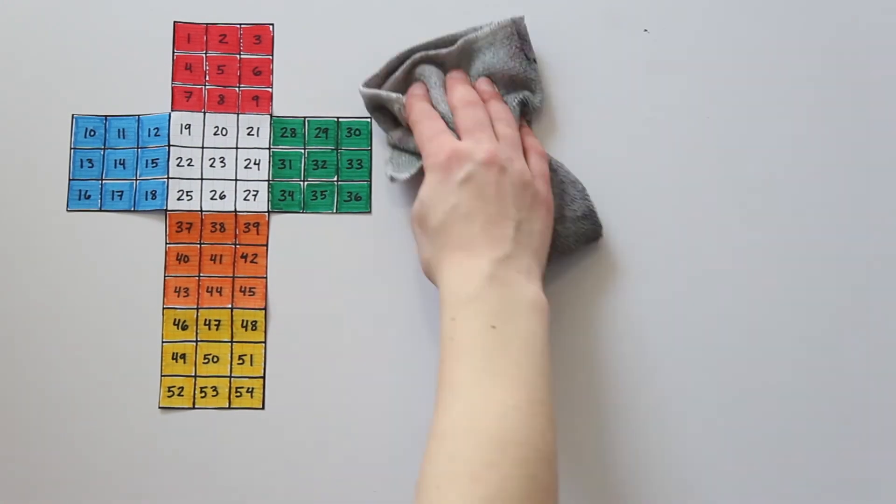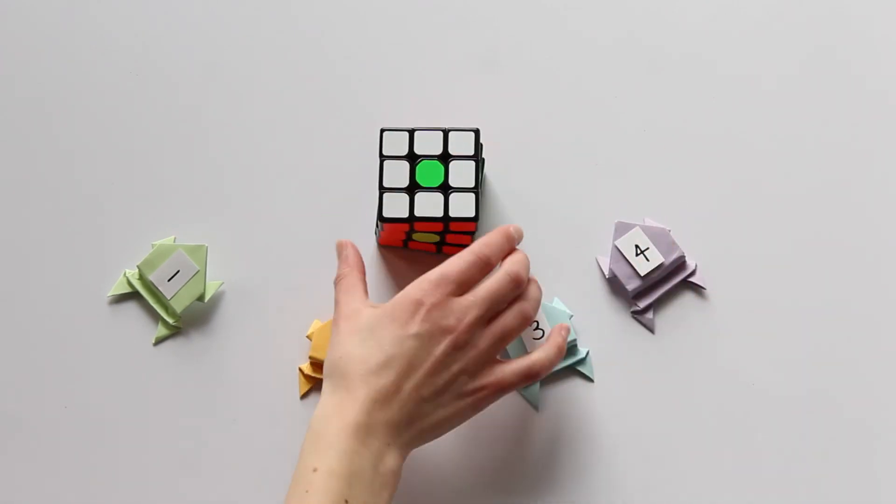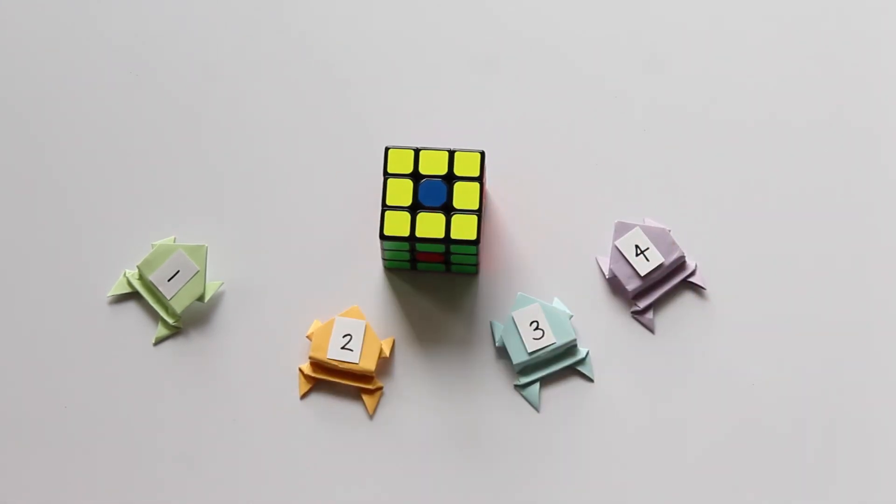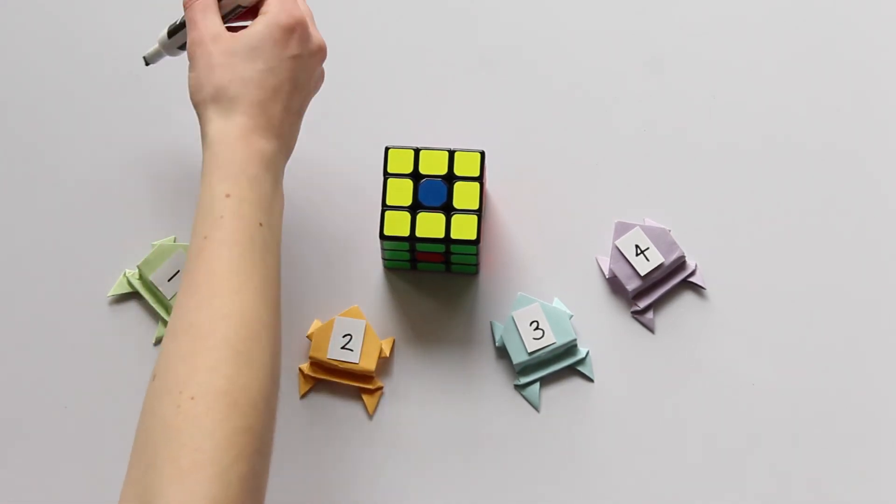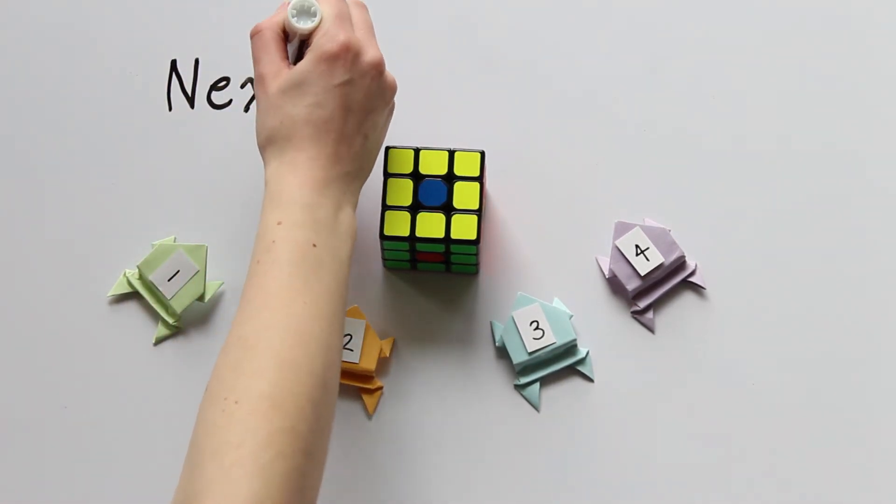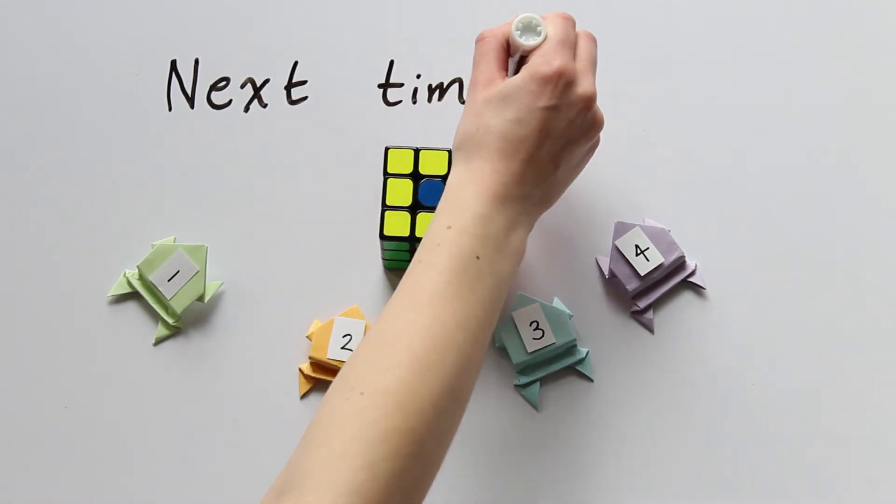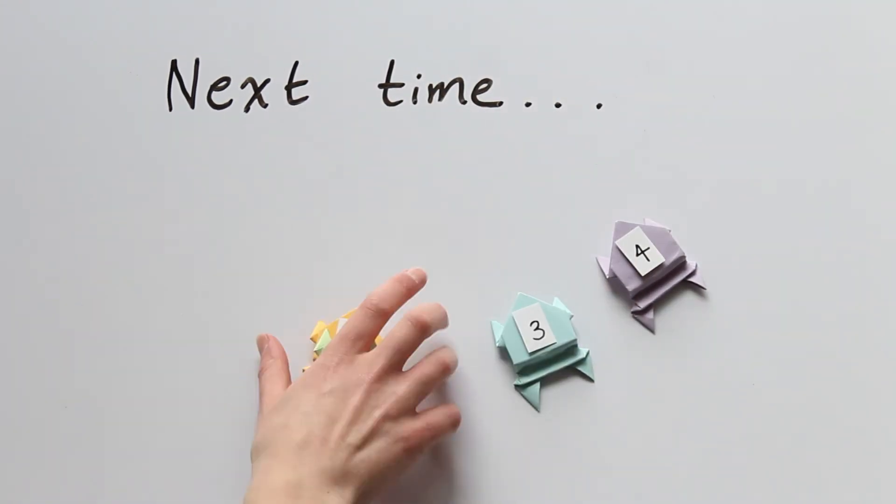In the next video, we will develop a more accurate model for how the Rubik's Cube moves and discuss the specific rules for this permutation puzzle. We will apply these rules in what we have learned about permutations with the frogs in order to find out what makes a permutation of the Rubik's Cube impossible. I hope you'll join me for that interesting question.